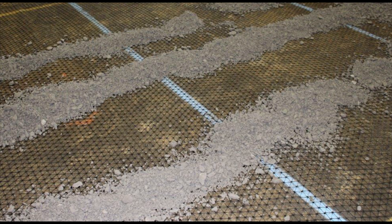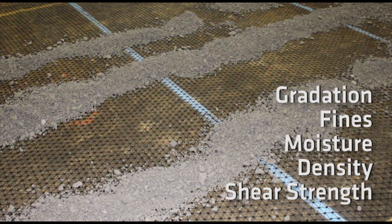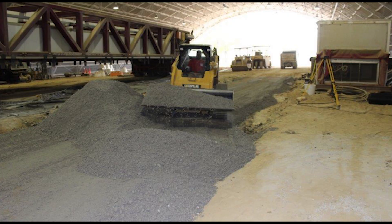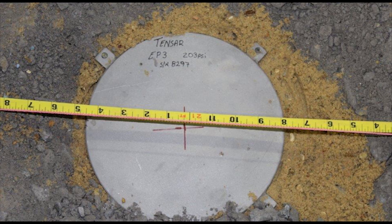Tensar triax geogrid and base placement are next. These materials are characterized as well. Gradation, fines, moisture density, shear strength, and other properties are defined. Tensar geogrid is then rolled out over the subgrade, and base rock is installed on top of the geogrid. Equipment used to place the base rock is appropriately sized so as not to shear the subgrade soils. Upon completion of the base rock placement, additional instrumentation is installed. The geometry and the thickness requirements are carefully monitored.